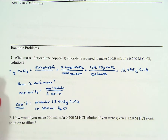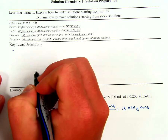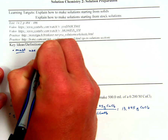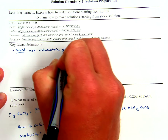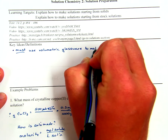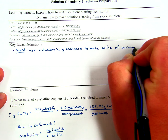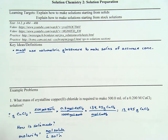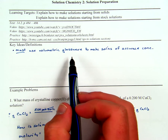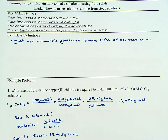So we need a way of measuring this out so we can dissolve the copper(II) chloride in water to give exactly 500 milliliters of solution. The first key idea: any time we're making solutions for accurate concentration, we must use volumetric glassware. Volumetric glassware is designed to measure one and only one volume — in our example, a 500 milliliter volumetric flask.